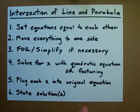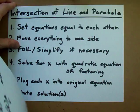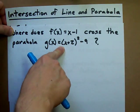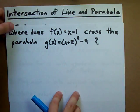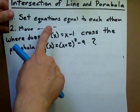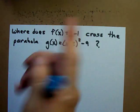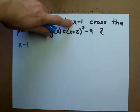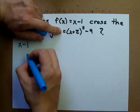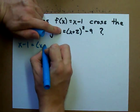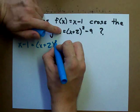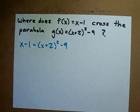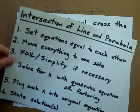Now, again, it may look intimidating at first, but let's try it out. Where does this line cross this parabola? Where do they intersect? Well, set the equations equal to each other. Piece of cake. Let's take x minus 1 equals x squared or x plus 2 squared minus 9. That equals that. Step 1's done. Move everything to one side.